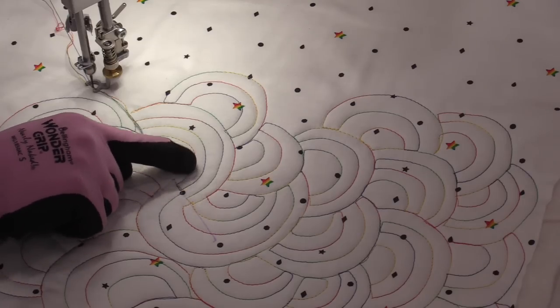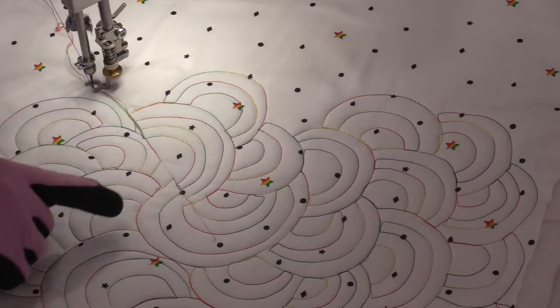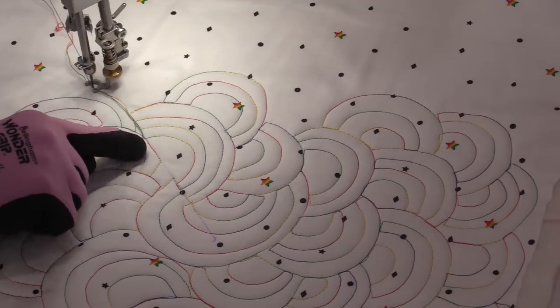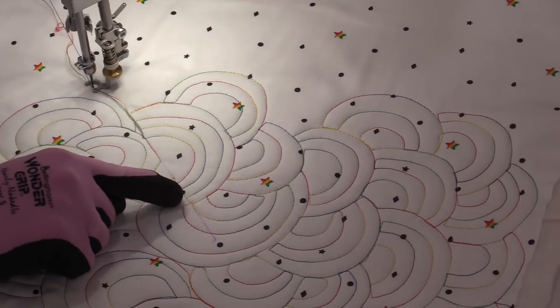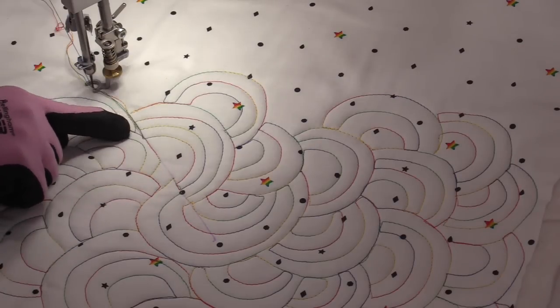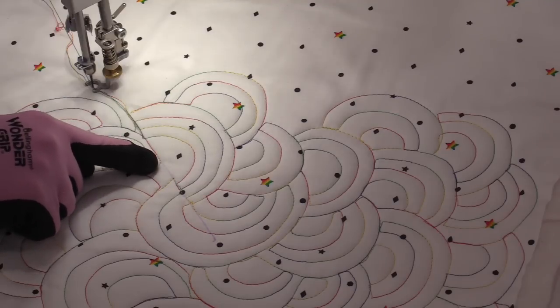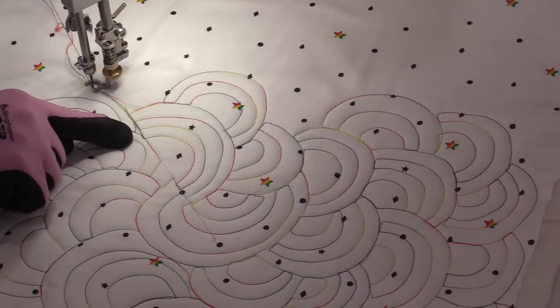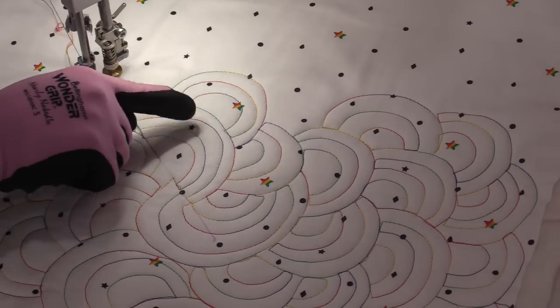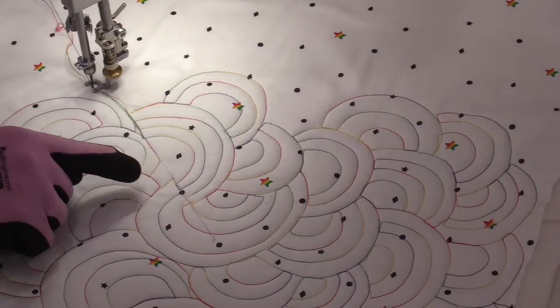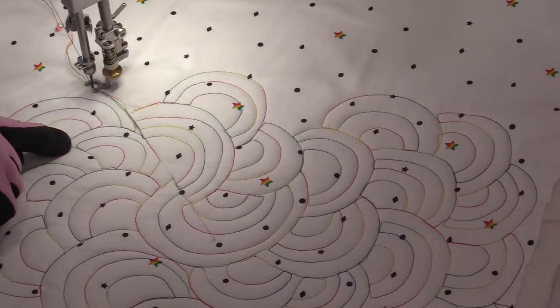So here's that first rainbow that I started. When I came to it, I've just stopped, and I've used that as an imaginary line. So when I came to this rainbow, instead of doing a full loop, I stopped and I traveled straight. I know rainbows are not straight, but it's going to look like that rainbow is underneath this rainbow. And then travel down.